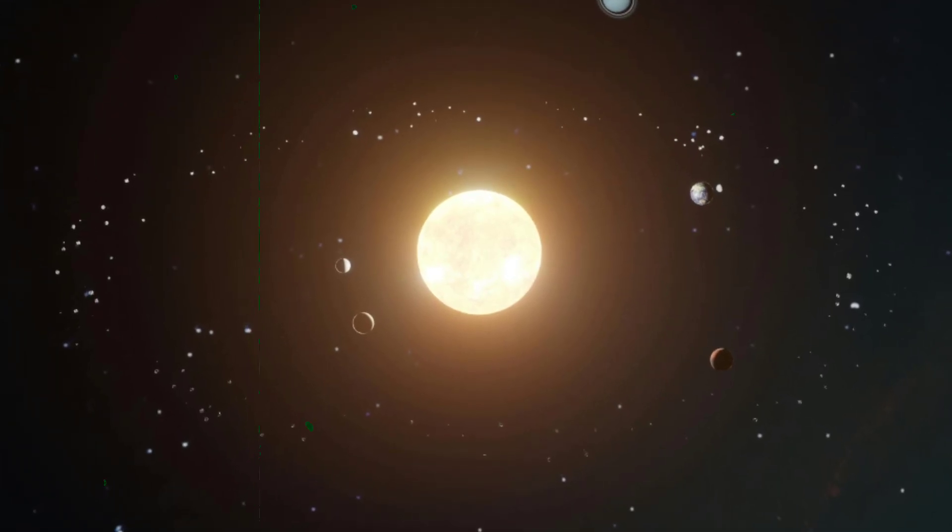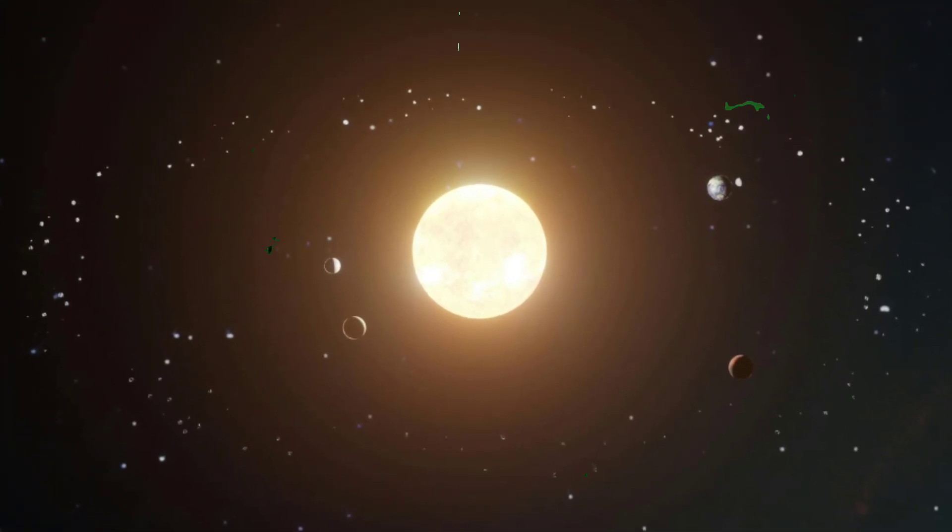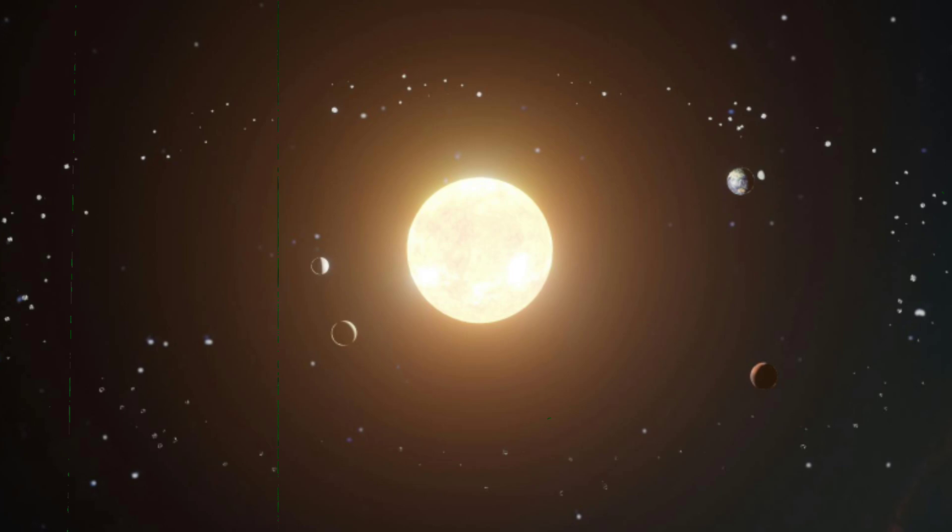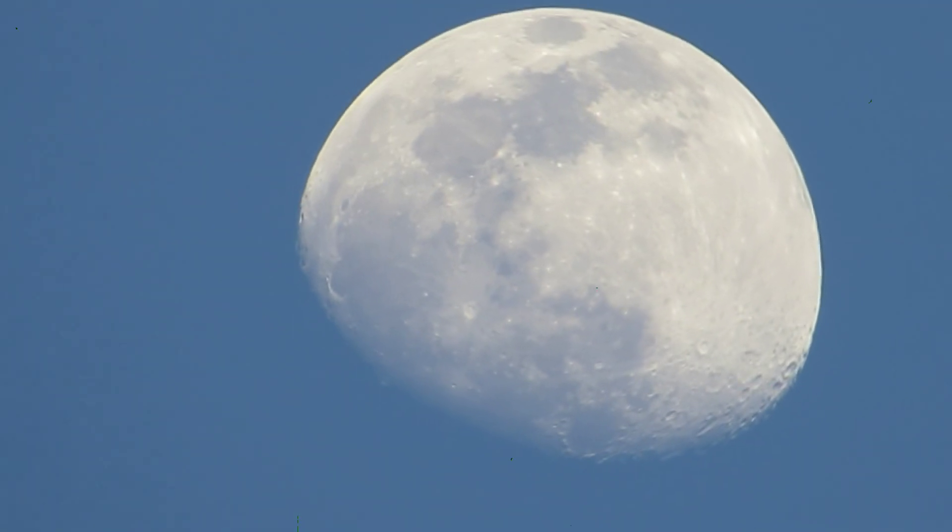Fact 1. The moon shines brighter than any other object in the night sky. However, it doesn't produce any light but reflects the sun's rays.